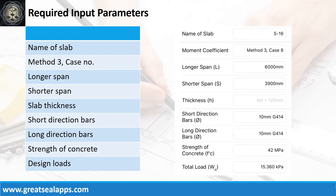Enumerate input parameters required: name of slab — S16, case 8 panel design; longer span — 6,000 mm; shorter span — 3,900 mm; slab thickness — 120 mm; main bars — 10 mm bar at grade 414; strength of concrete — 42 MPa; and factored load — 15.36 kPa.